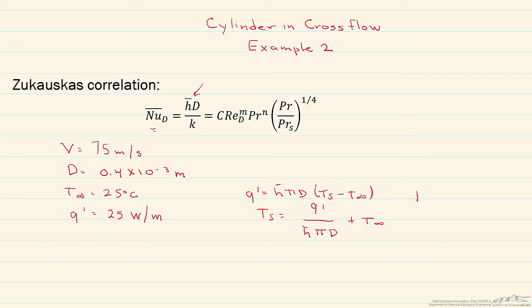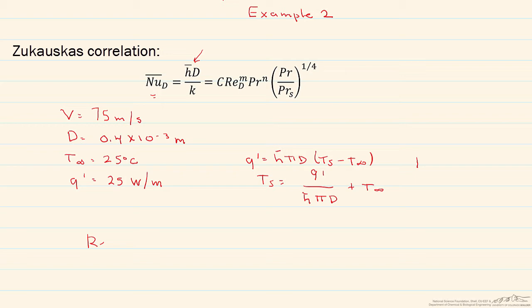So for this particular problem, what we're going to need to do is find the Reynolds number. So our Reynolds number is just velocity times diameter divided by the kinematic viscosity. And from that, we'll find the constants C and M.